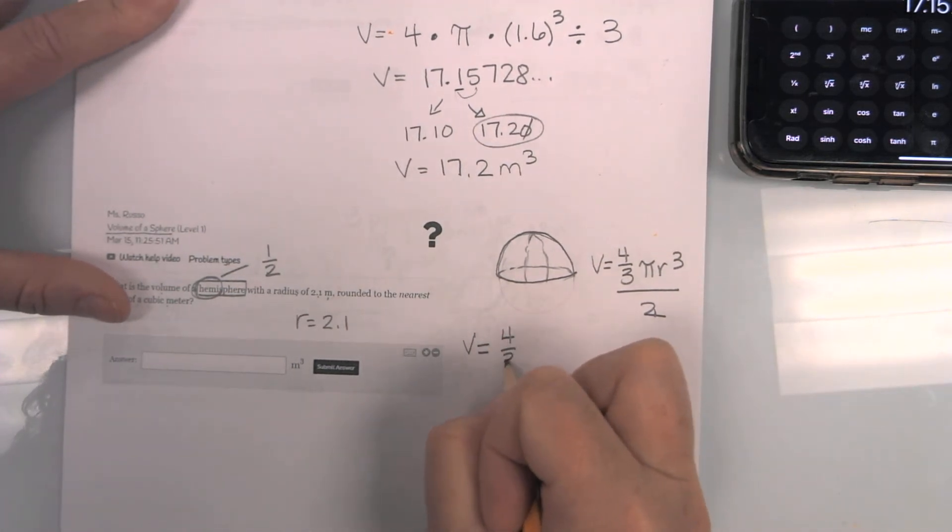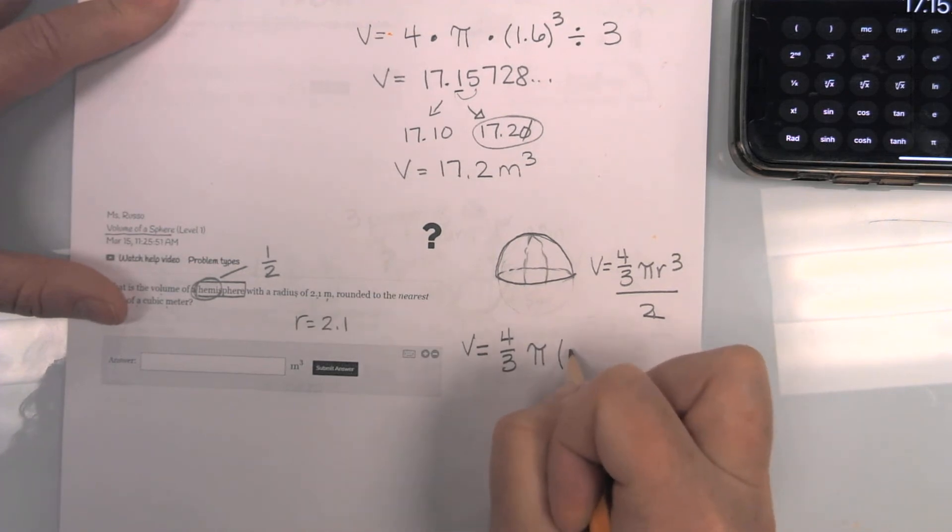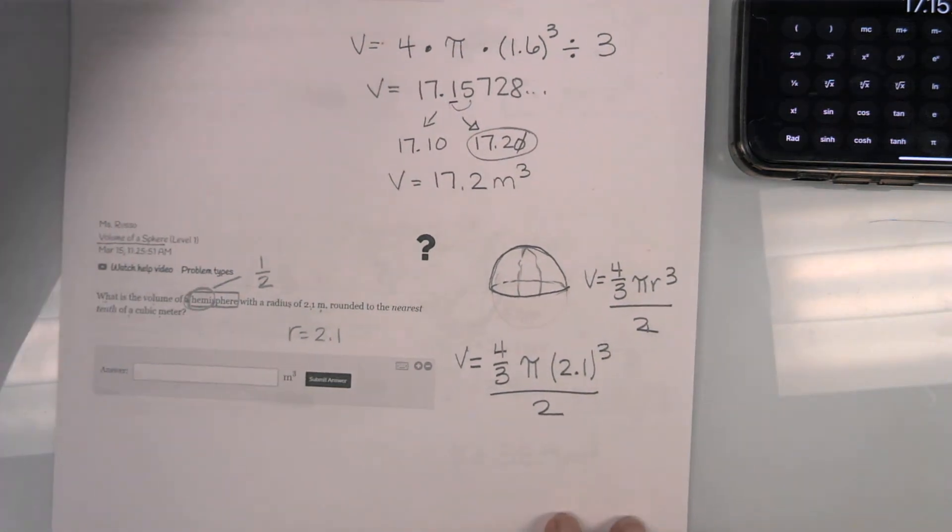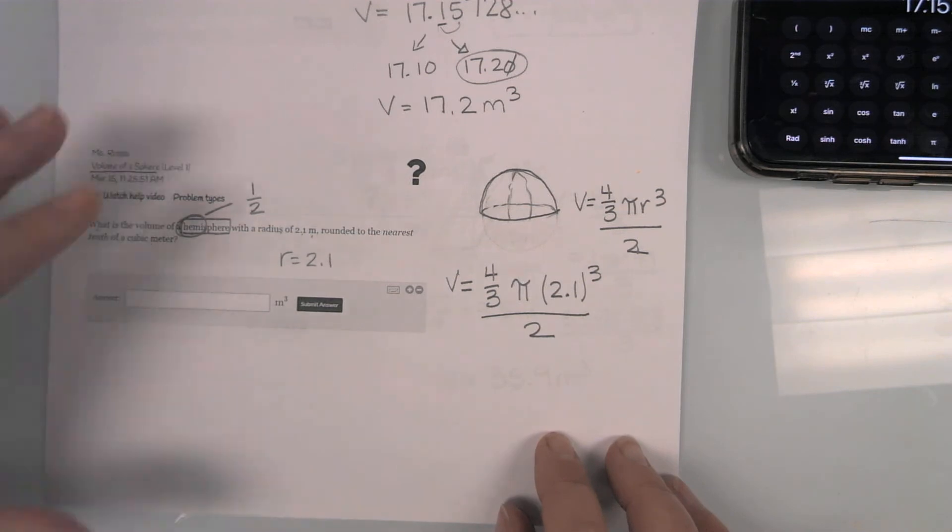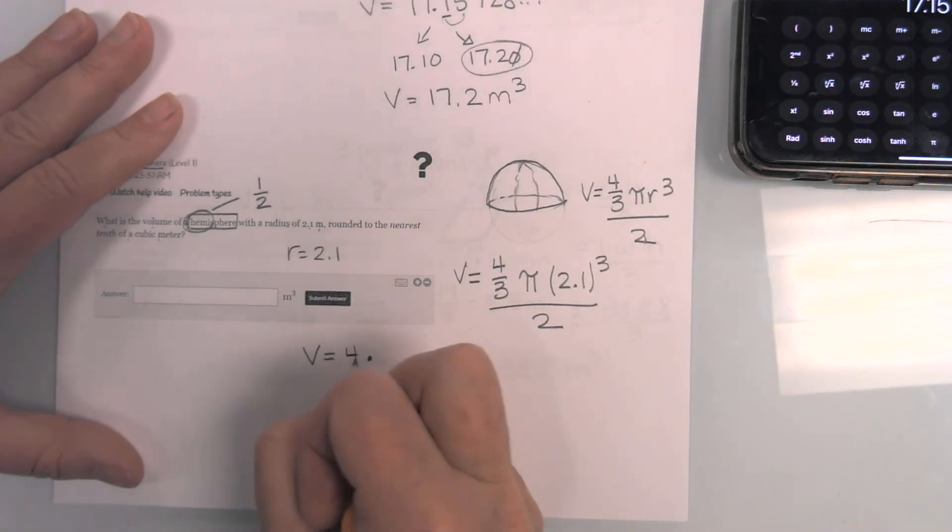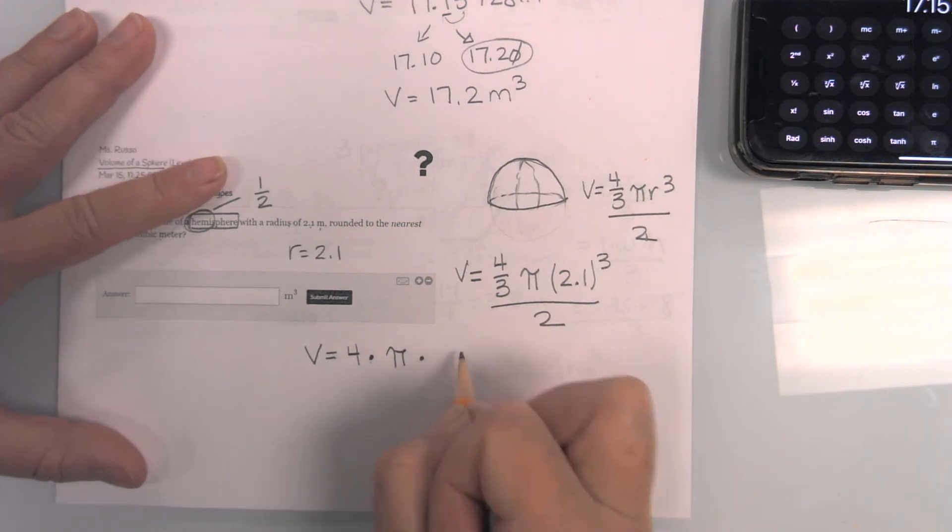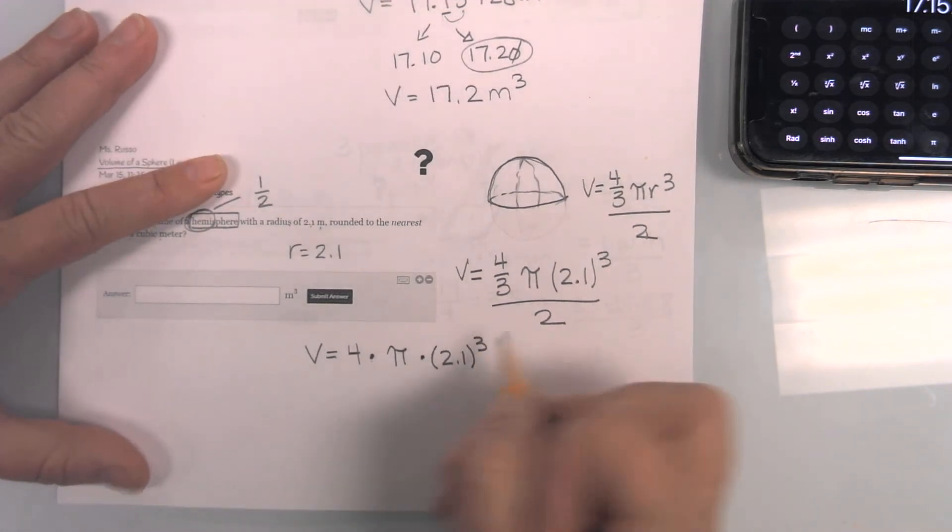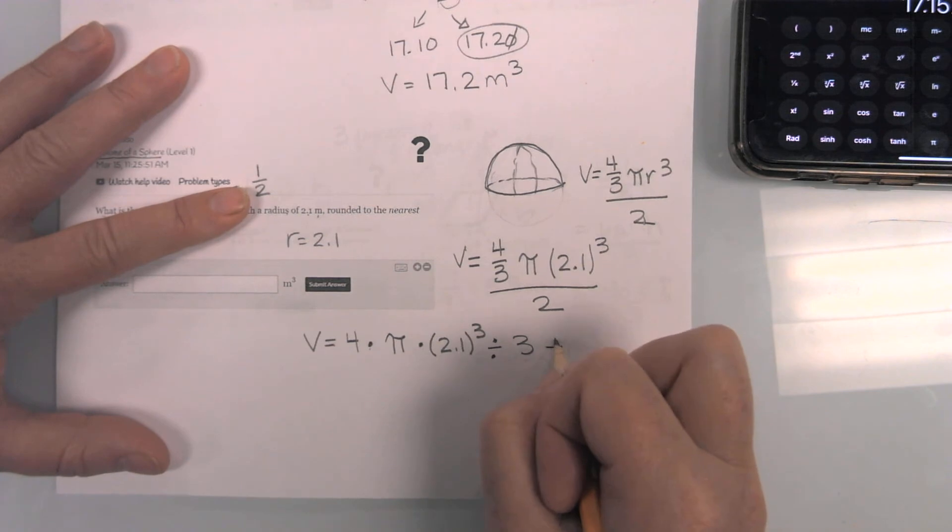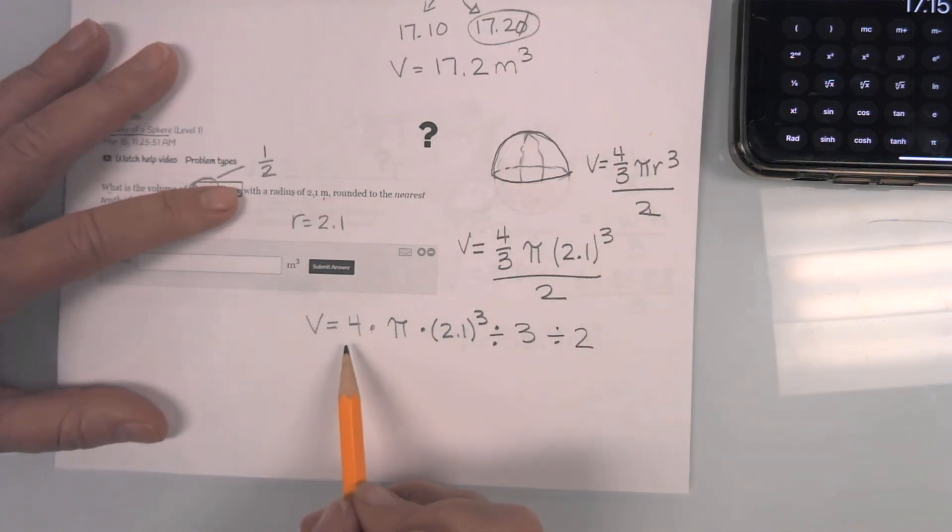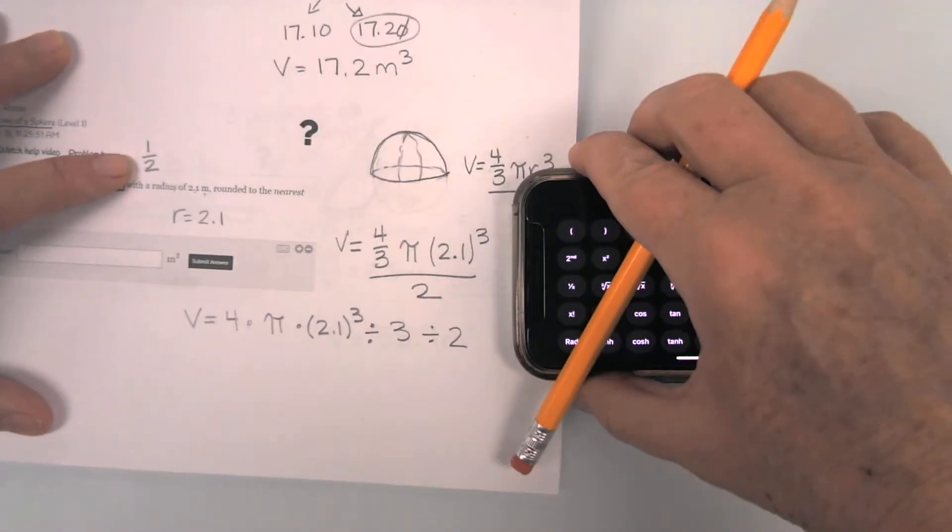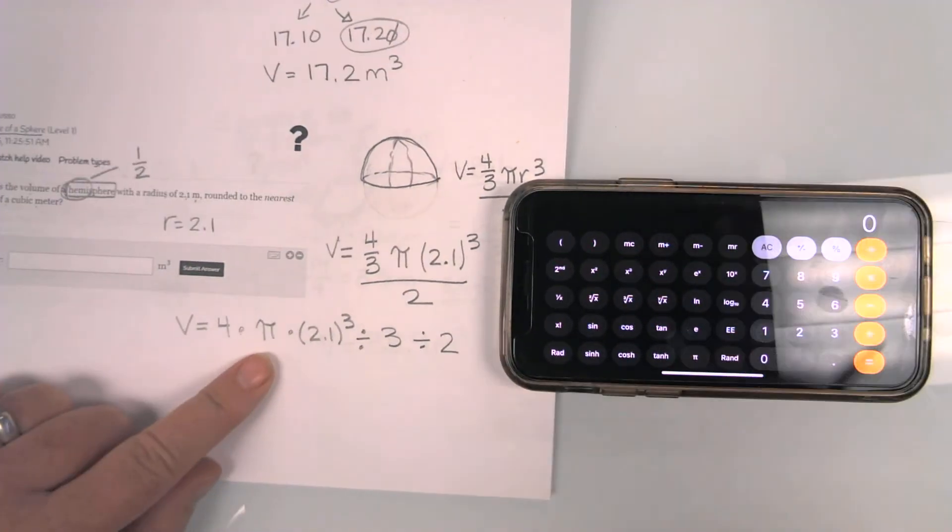Volume equals four-thirds pi r, which is 2.1 cubed, and then I'm going to divide by two. So how do I type that in on the calculator? Because that is always the challenge. Volume equals, we're going to do like we did up here. I'm going to do four times the pi times 2.1 cubed. Then I'm going to divide by three. Then I'm going to divide by two. It is possible just to put this string in. Fortunately, our calculators are pretty smart, and they can keep track of everything we're doing. So let's go ahead and try this.